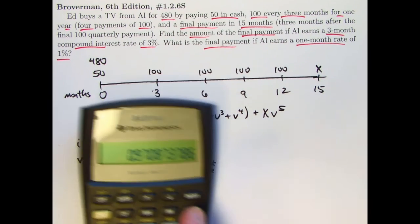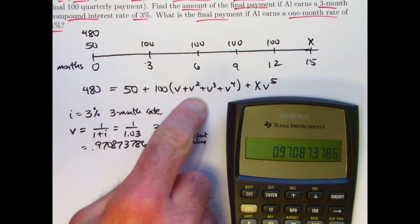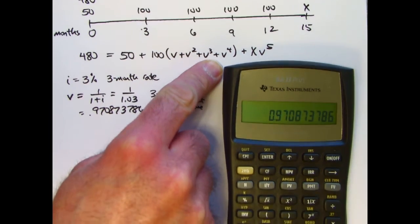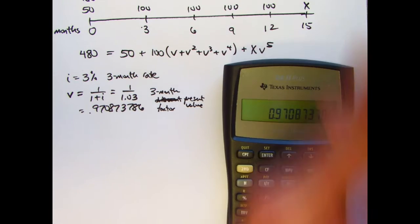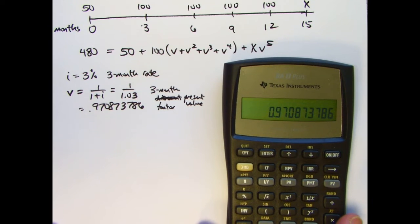So I will go ahead and use the store feature here. I'm going to calculate these powers first and store them in memory. And then add them all up. Multiply by 100, then add 50. Write that down. Also figure out what V to the fifth is. Write that down and solve the resulting algebra equation for X.